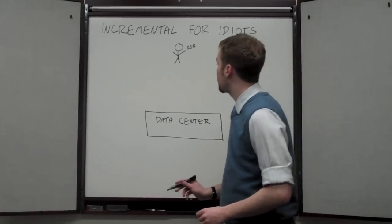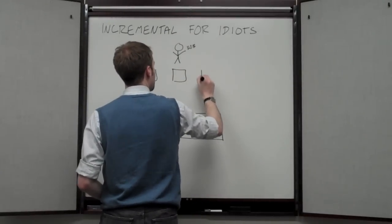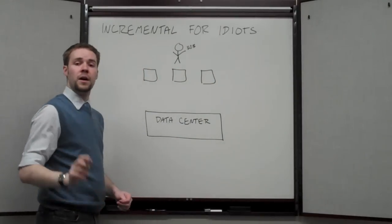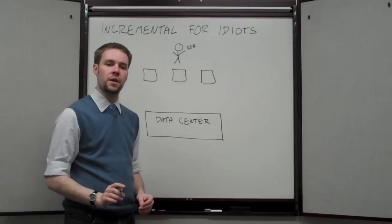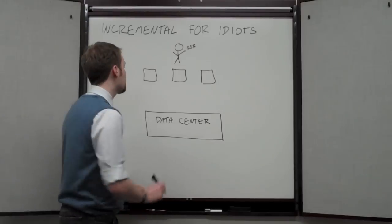So here we've got Bob. Let's say Bob's got three files. Now, as you learned in our deduplication video, these files, when they get backed up, are broken up to a bunch of little pieces which are called blocks.